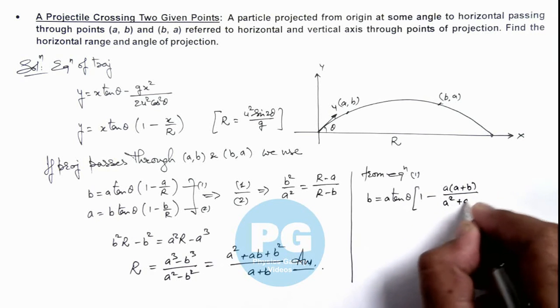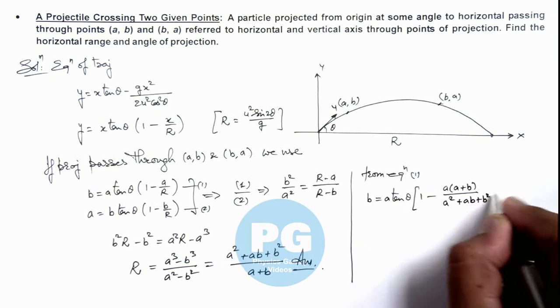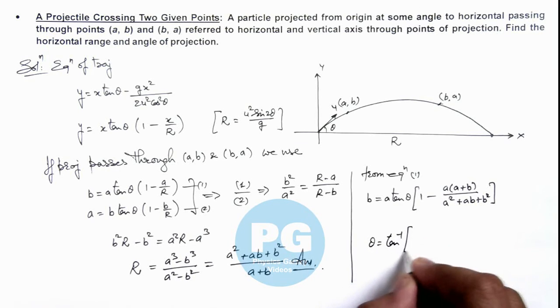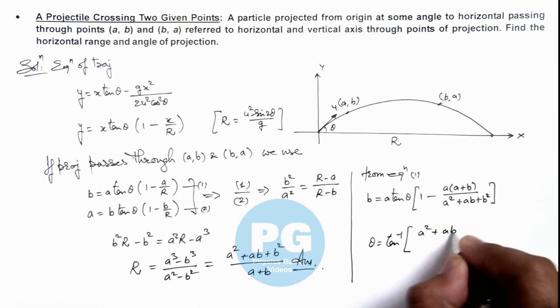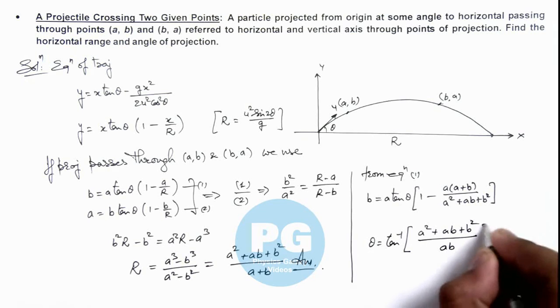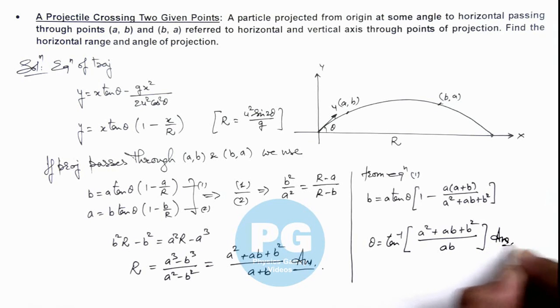a by R, so if we substitute the value of R, this is a multiplied by (a plus b) divided by a squared plus ab plus b squared. So if we simplify this expression, the value of theta we are getting is tan inverse of a squared plus ab plus b squared divided by ab. This is another result of this problem.